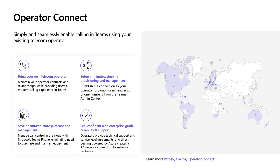Now we're going to talk about Operator Connect. Operator Connect allows organizations to maintain their existing PSTN services in Teams, and it gives you a lot of the benefits of simplified deployment, managed hardware, and shared support in SLAs with operators. You can keep your existing contract with a participating operator, or if you're looking for a new operator, you can see a full list of participating partners directly from the Teams Admin Center. You can very quickly deploy in Teams — get set up in minutes, quickly provision and assign phone numbers to users, reduce the cost of hardware and management compared to traditional telephony solutions, and benefit from enhanced support and reliability.